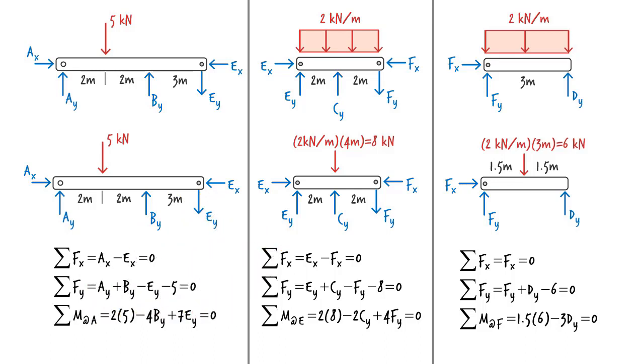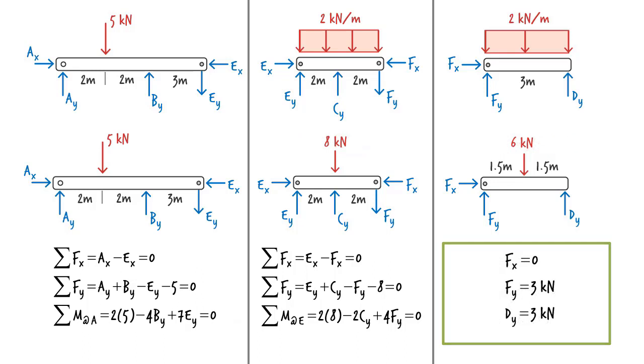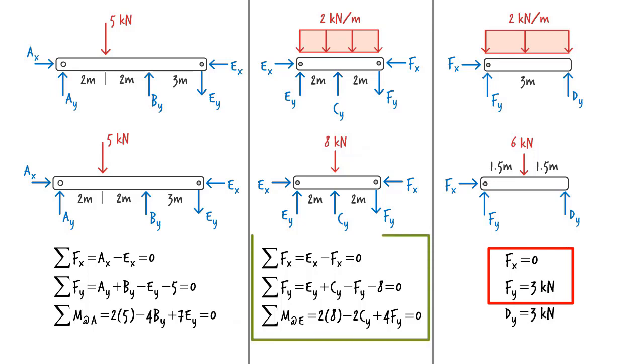Although we can solve all nine equations simultaneously, it would be more convenient to solve them by part. First, we solve these equations for D_Y, F_Y, and F_X. Now substitute zero for F_X and three for F_Y in these equations, which gives us these equations.